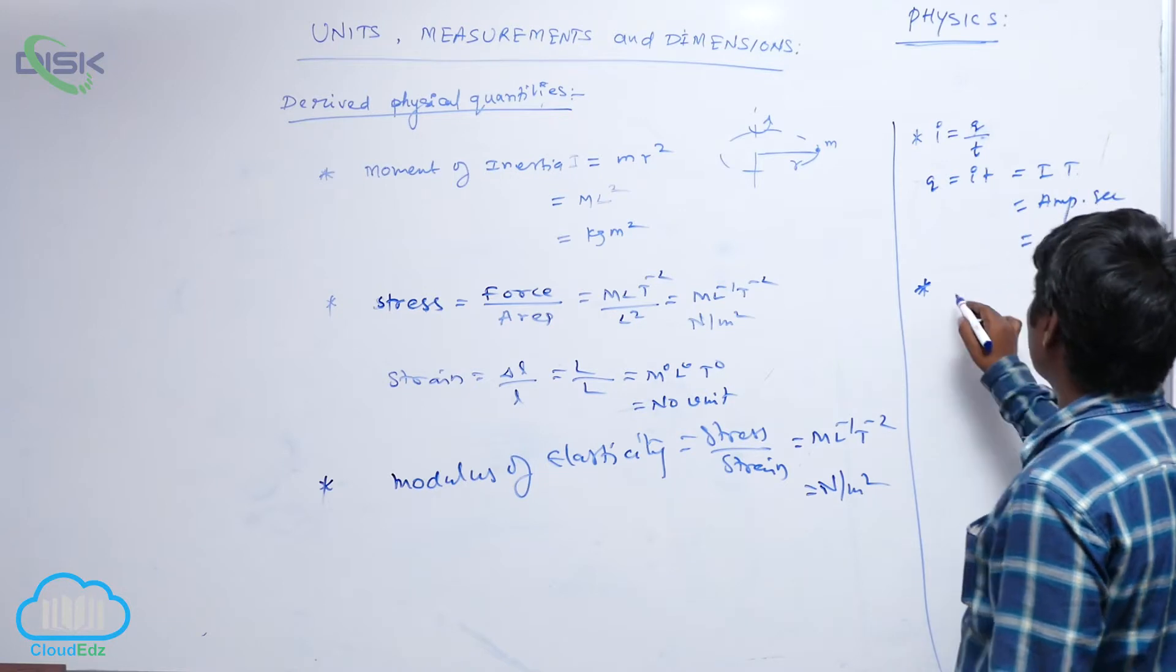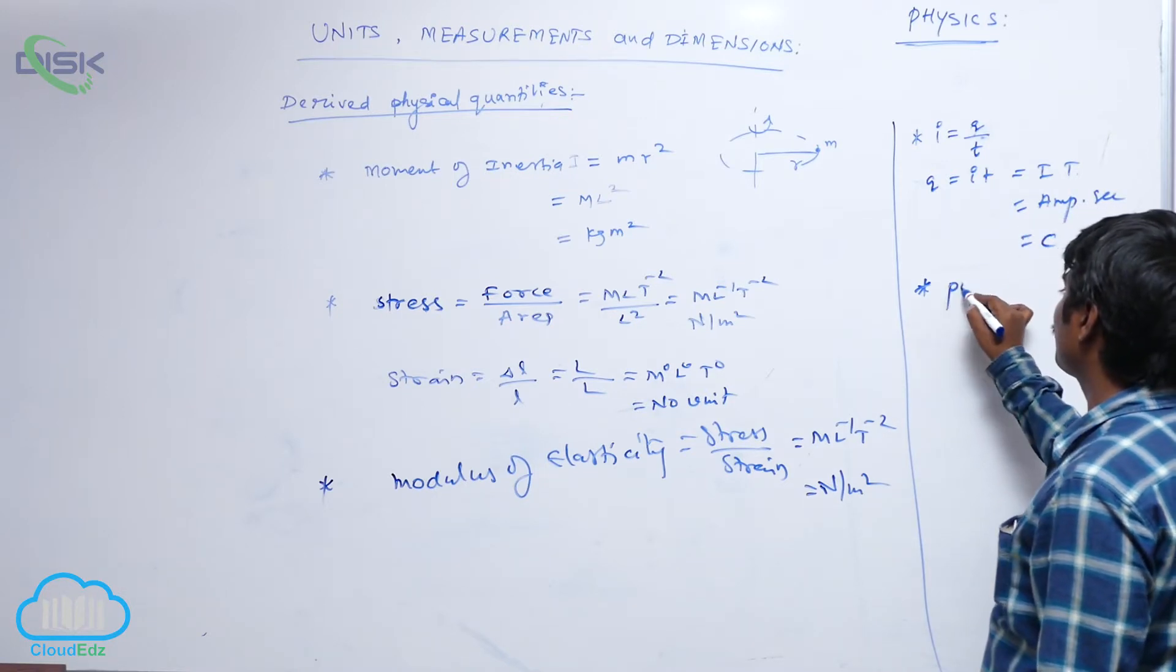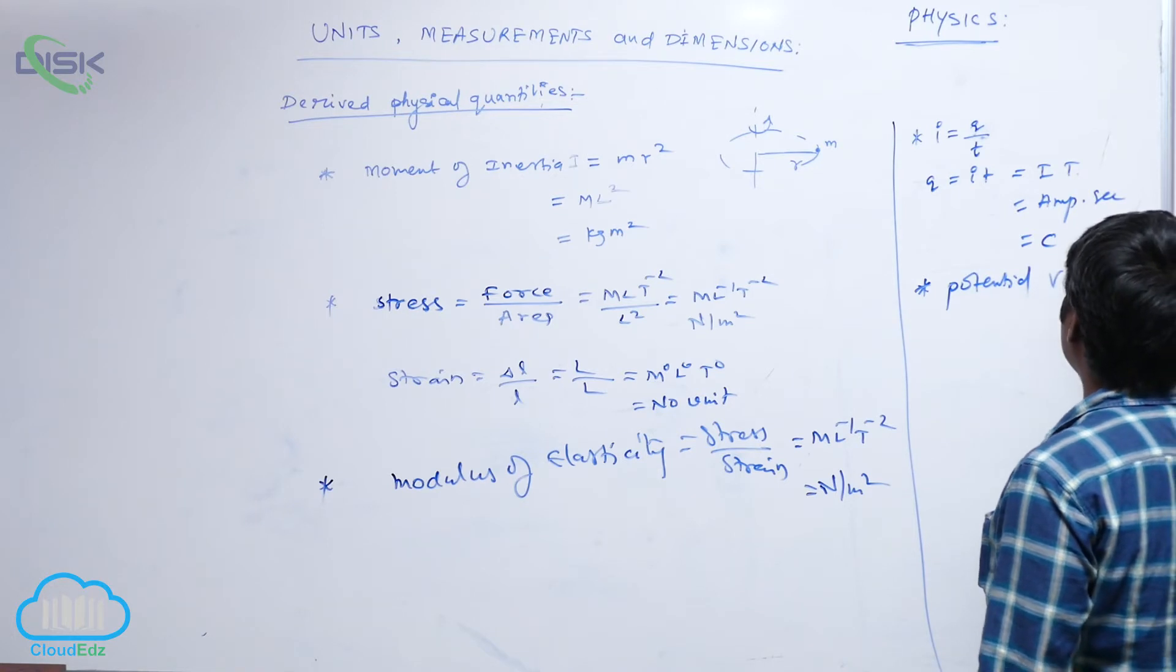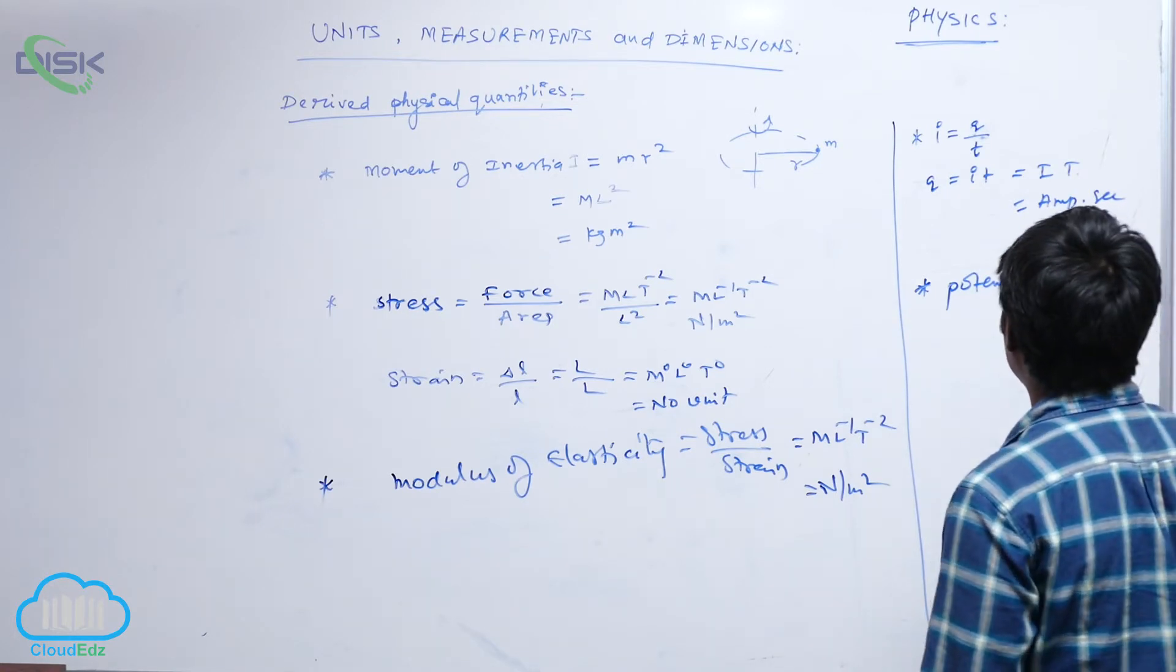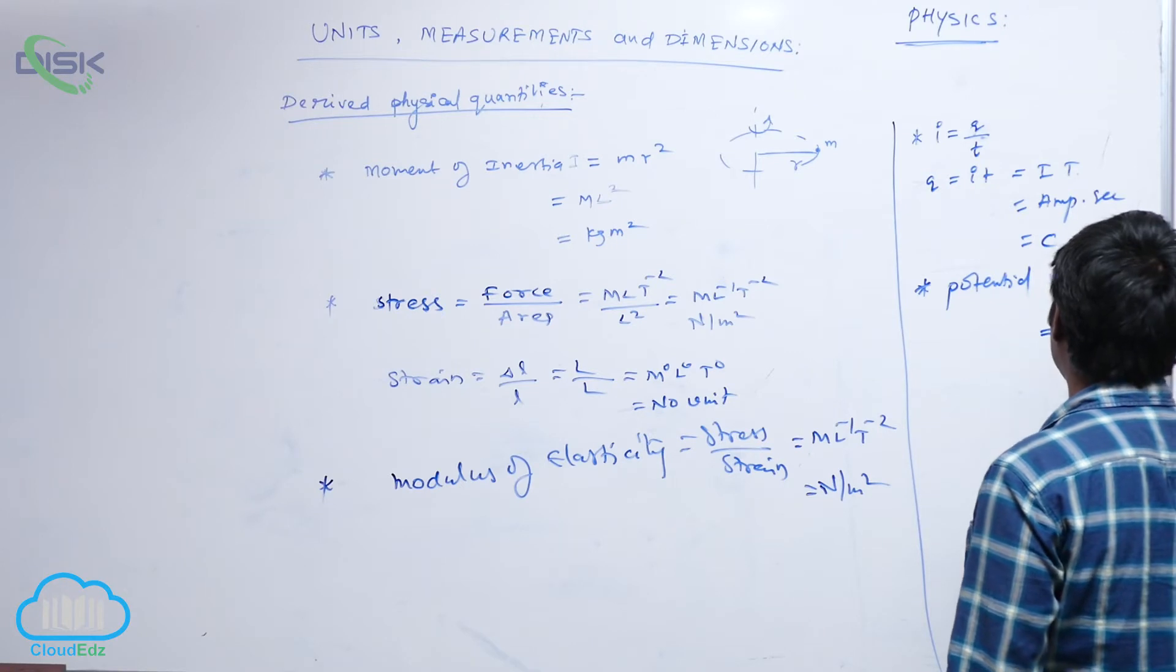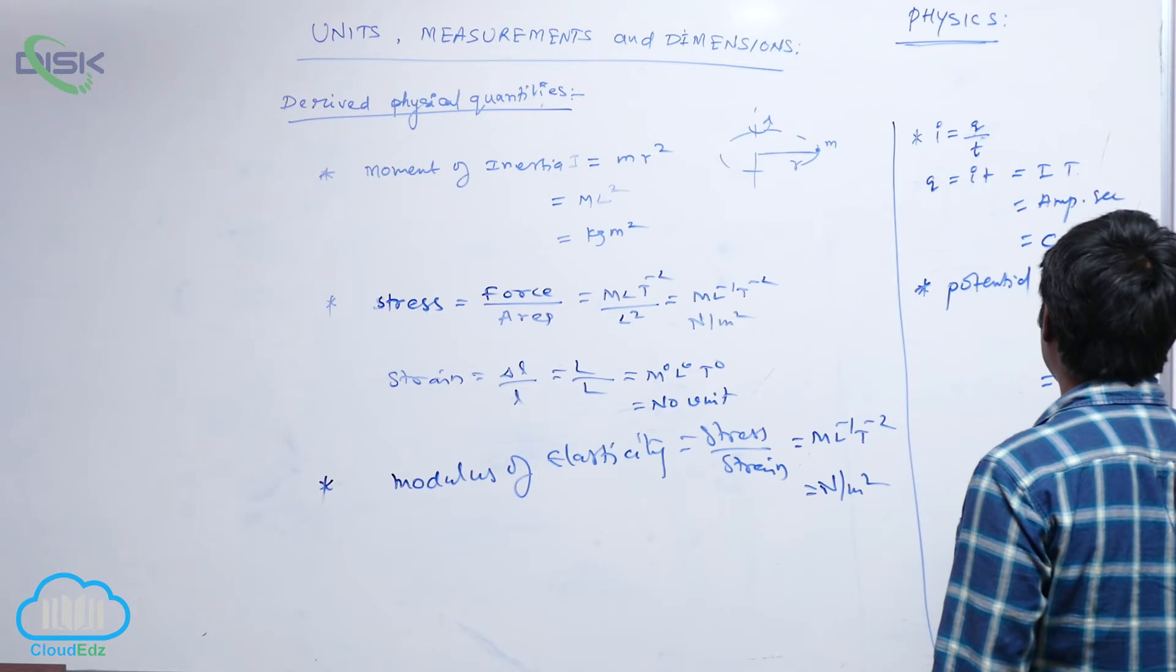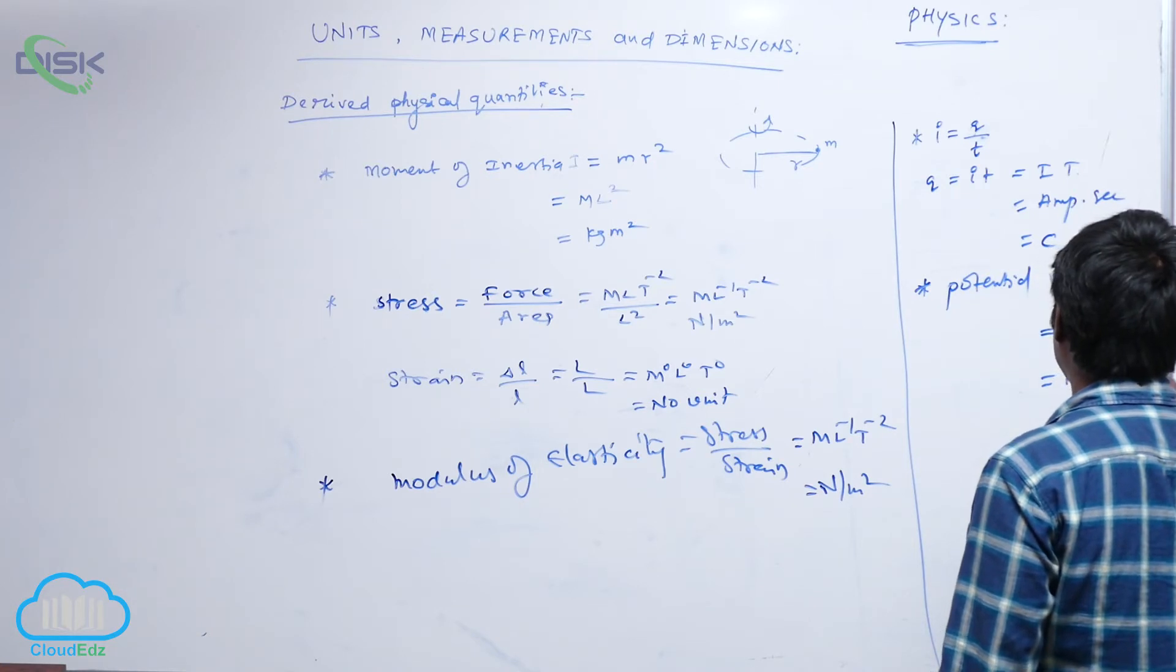Next, potential or potential difference. V is equal to w by q is the formula, w is work done, so m l square t minus 2 by q is i t. What you are going to get: m l square t minus 3, i minus 1.